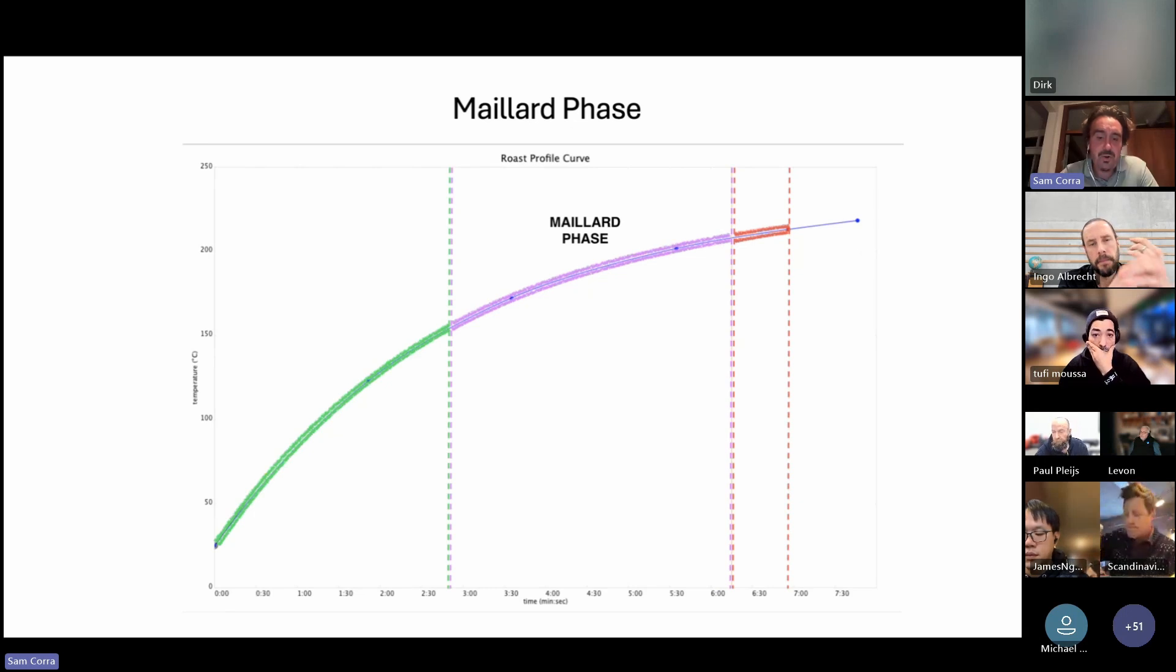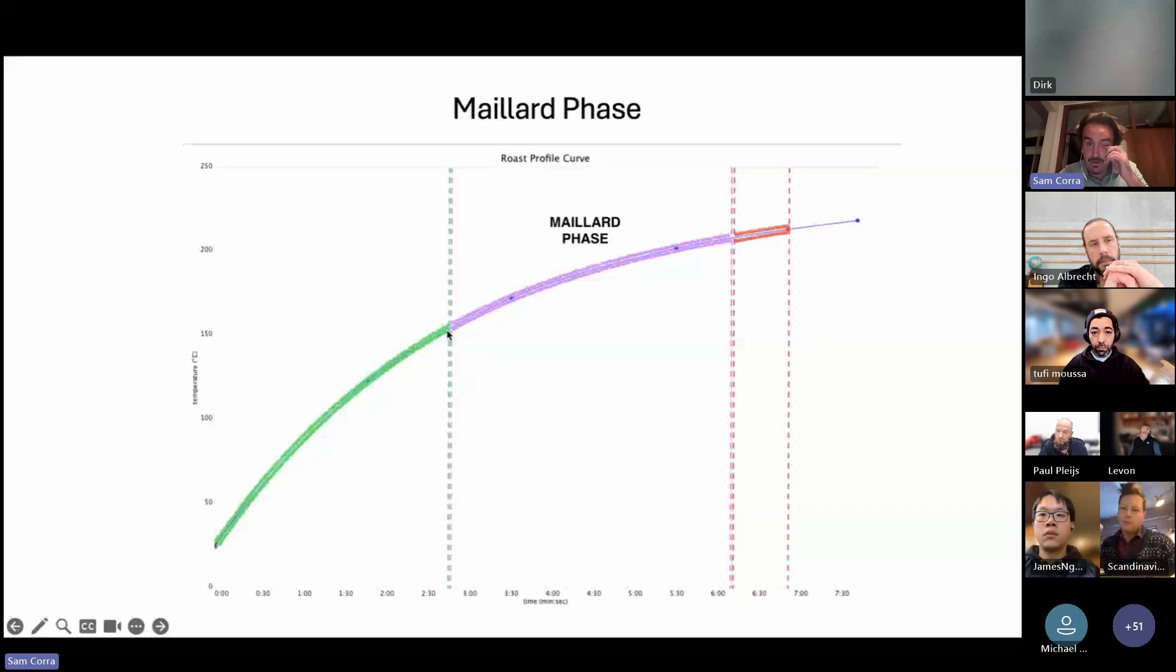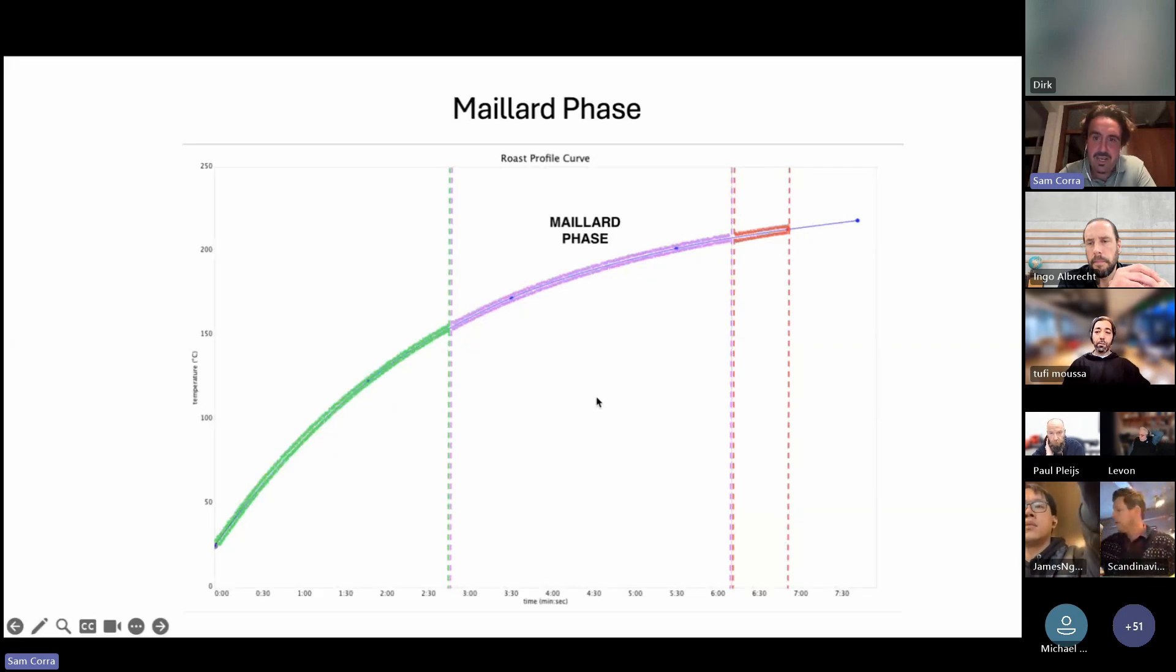You're getting into that more coloration when you start to see that color change happening. You can also measure and see how that will directly translate. As I mentioned, the development phase really relates to these things here, which is controlling the increase.